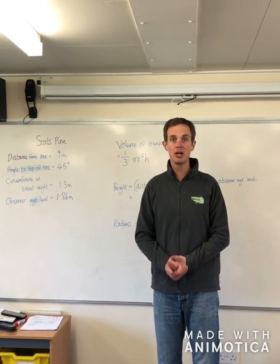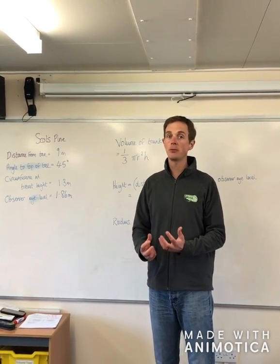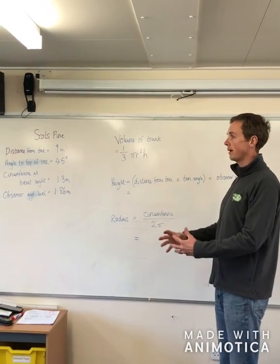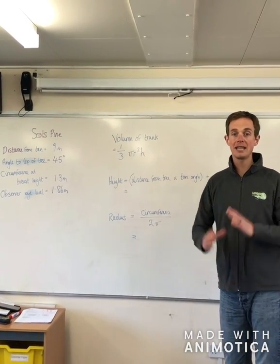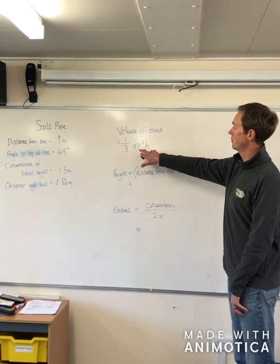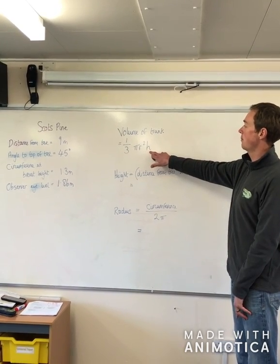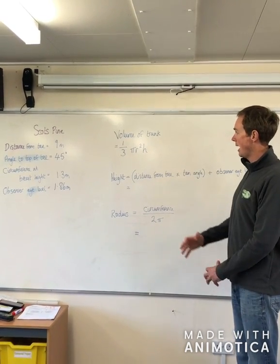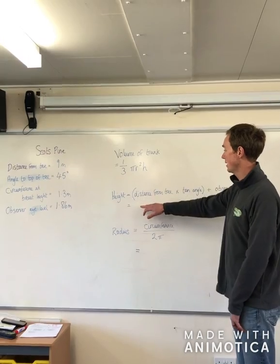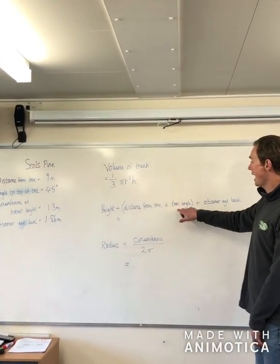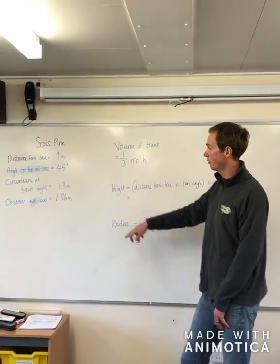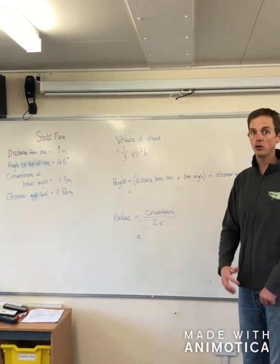When it comes to measuring how much carbon is stored within our tree, the main calculation we need to start with is to work out the volume of the trunk. We're assuming that our trunk is a cone shape. To work out the volume of a cone, we need one-third times pi times r squared, r being the radius, and then we multiply that by h, our height of the tree. The height is our distance from the tree times the tan of the angle to the top of the tree, then we add the observer eye level. For the radius, we take our circumference and divide that by 2 pi.